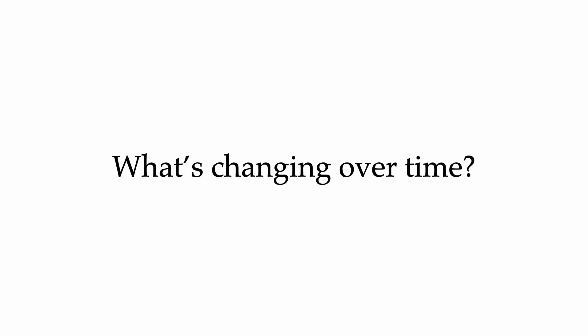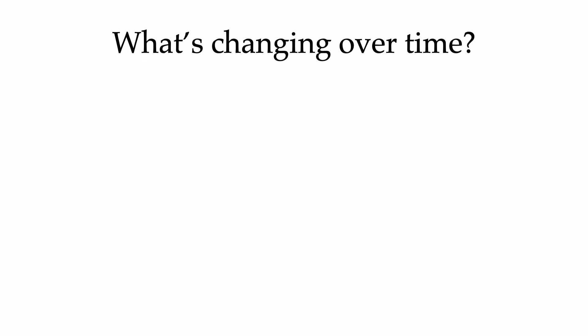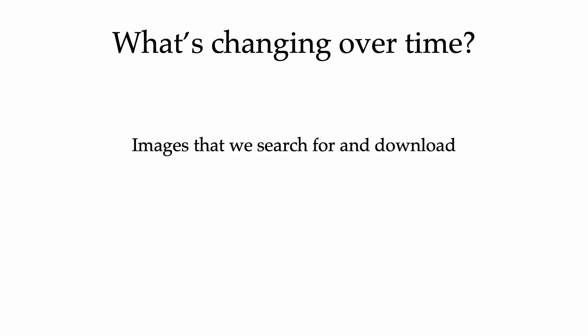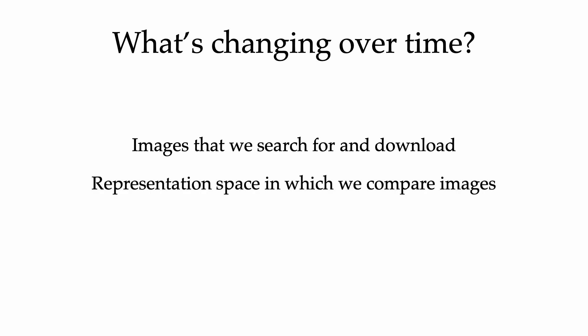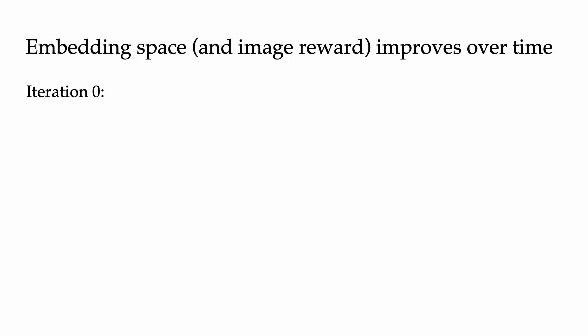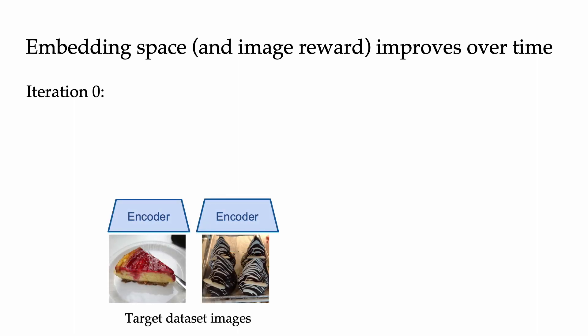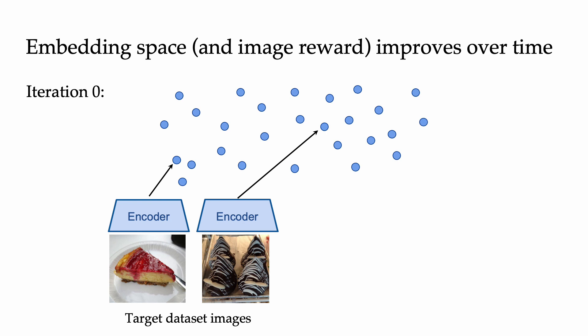So what's changing over time with our Internet Explorer method? First, of course, we're downloading new images in each iteration. But second, the representation space in which we compare images also changes. As our representations change over the course of training, our image relevance reward also changes, since it's computed in that representation space. In the first iteration, we start with a relatively poor model that embeds images more or less randomly in their representation space.